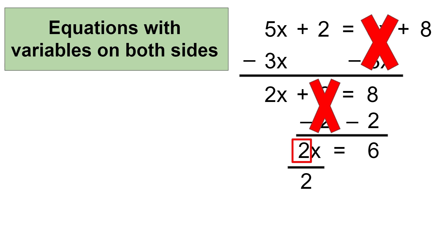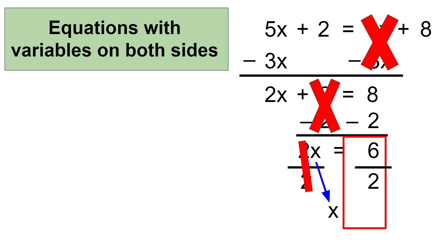Remember, whatever you do on one side of the equal sign, you need to do the same on the other side to keep it equal. So to remove 2 from the left, I'm going to divide by 2 on the left. And 2 divided by 2 equals 1, which completely isolates the variable x. The reason this isolates x is because 1 multiplied by any number equals whatever that number is. So we can bring down the variable x without writing the number 1 next to it. Since I've divided by 2 on the left side, I'll also need to divide by 2 on the right side. And 6 divided by 2 equals 3.